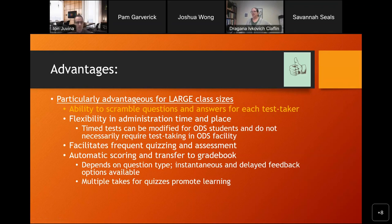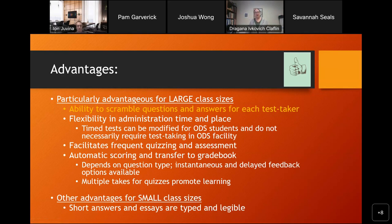You can also give students multiple opportunities on lower-stakes quizzes, which I think is really helpful to promote learning. Students will take a quiz, identify what they are weak in, go back and study, and come back and retake the quiz. The score that gets saved can be the highest of the two or an average — there are different ways of setting the system up for that. For smaller class sizes, you can still use short answer and essays, typed, and they'd be a little more legible.